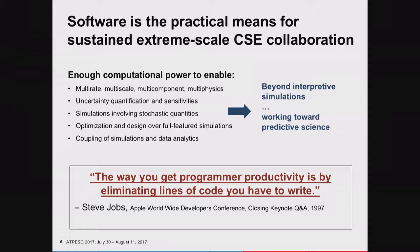The way to get productivity is to reduce the number of lines of code any given programmer has to write. Numerical library software developers want to take advantage of computer science tools. Application scientists want to take advantage of numerical libraries. There's a big ecosystem of scientific software development happening today that allows applications to be developed much more effectively and efficiently, allowing us to get more science done.